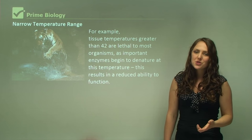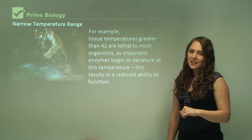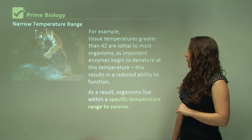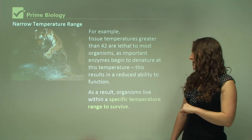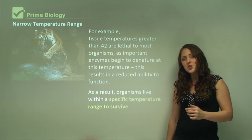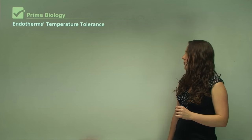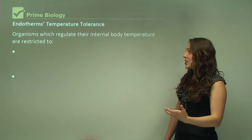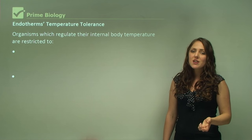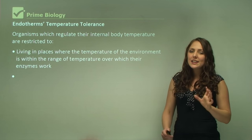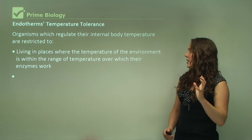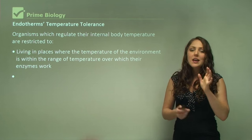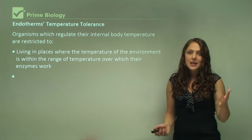This results in a reduced ability to function — our bodies are less efficient at functioning. As a result, organisms live within a specific temperature range to survive. Endotherms — organisms which regulate their internal body temperature — are restricted to living in places where the temperature of the environment is within the range over which their enzymes work, and this may differ for different environments.